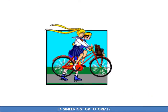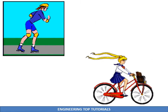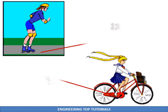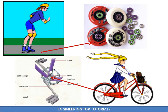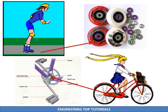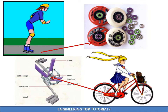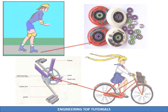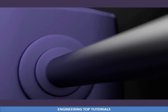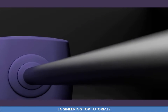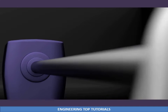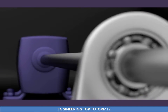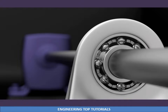Anyone using a bicycle or roller skates must have noticed the presence of ball bearings that make the motion of the wheels in these two devices very smooth. Basically, a bearing is a mechanical element that permits relative motion between two parts, or we can say it's something that bears up the load and yet rotates.